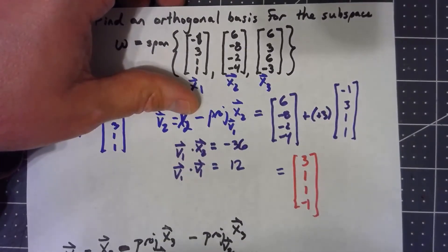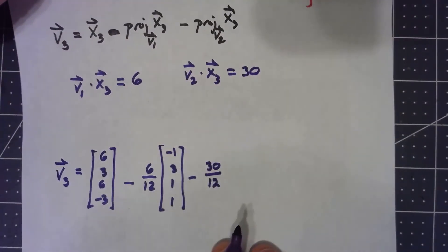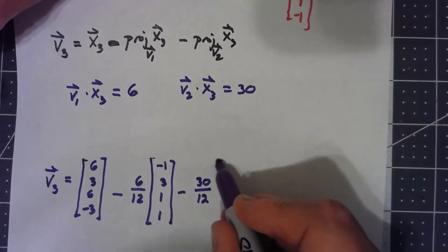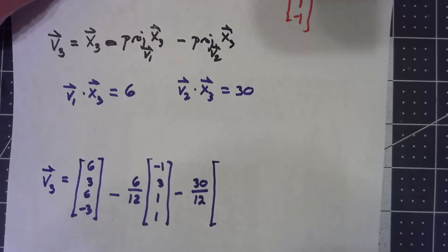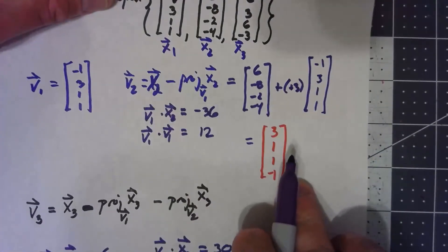So I've got 30, again, over v1 dot v1, so I've got 30 twelfths, times v2, was this one.